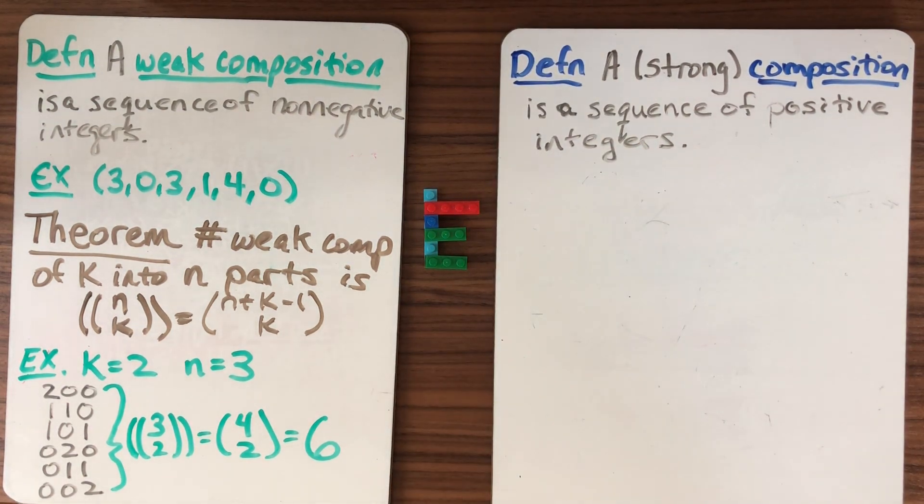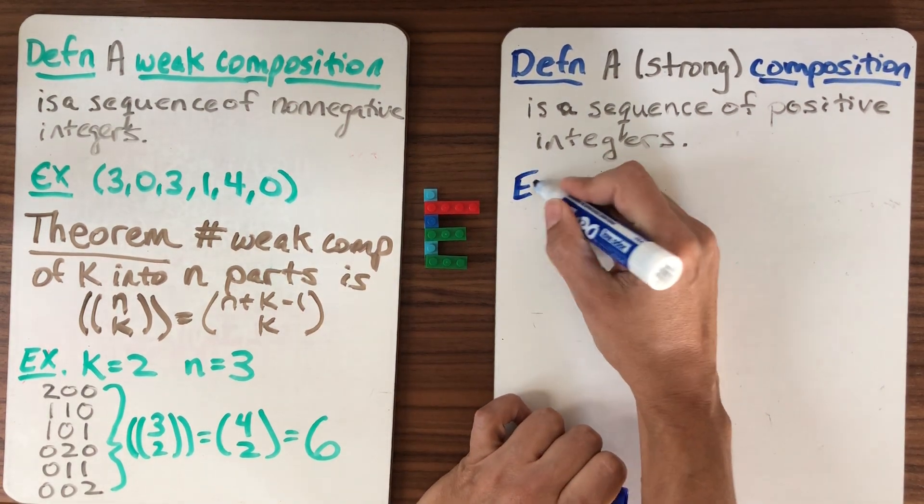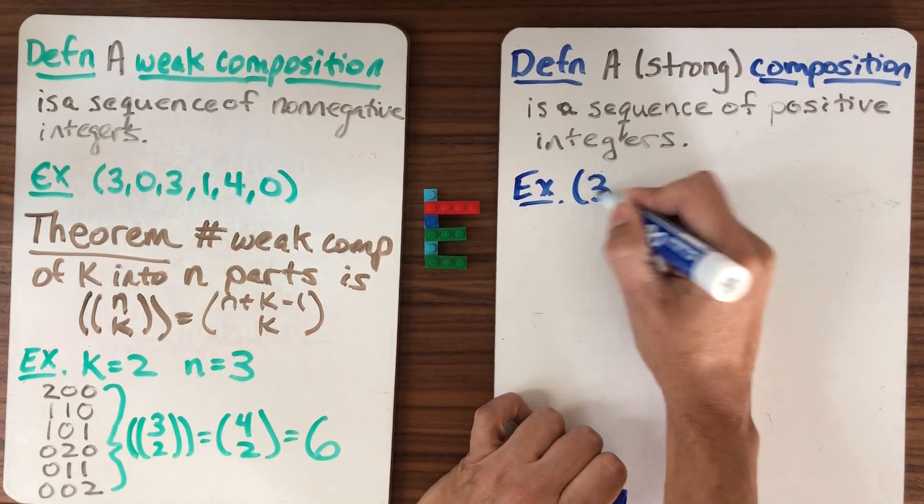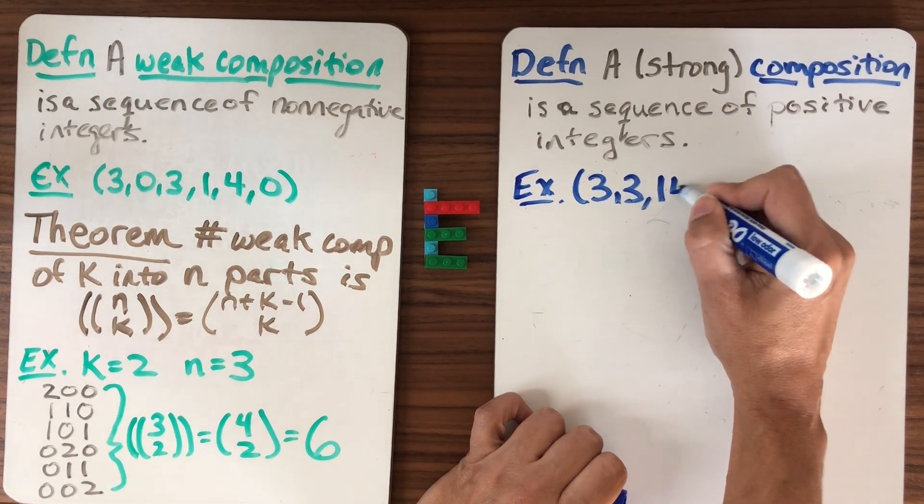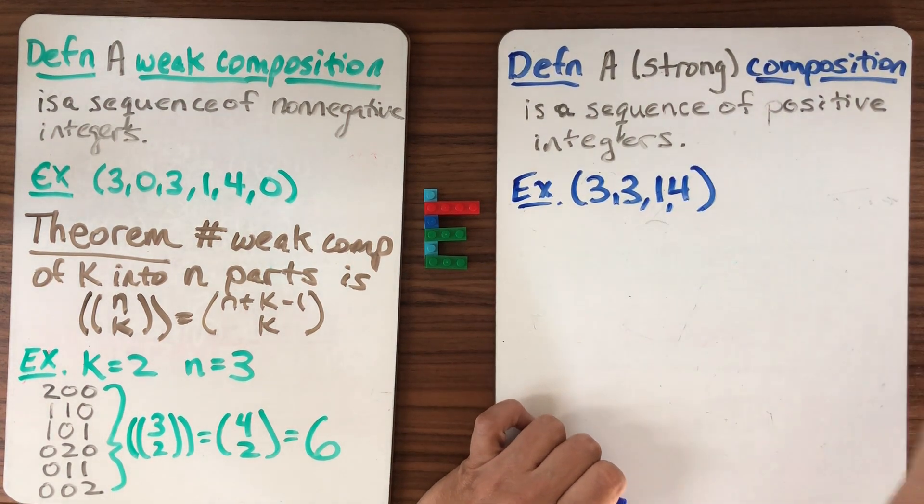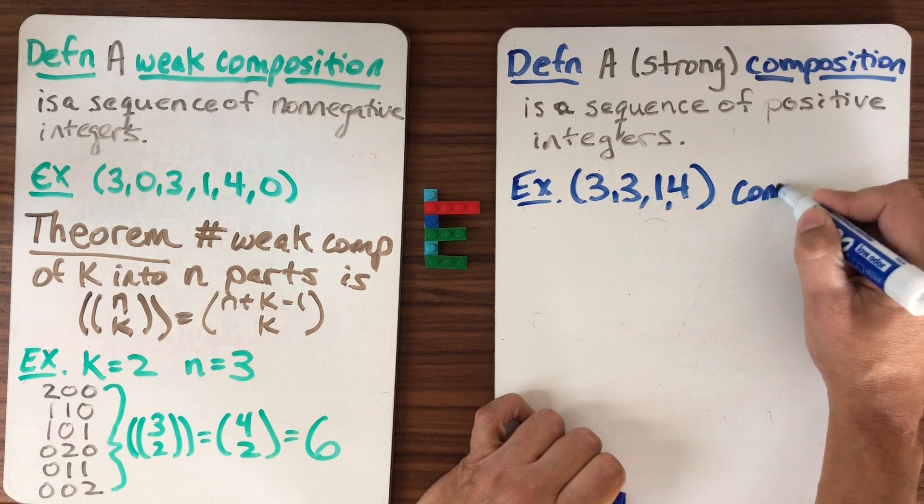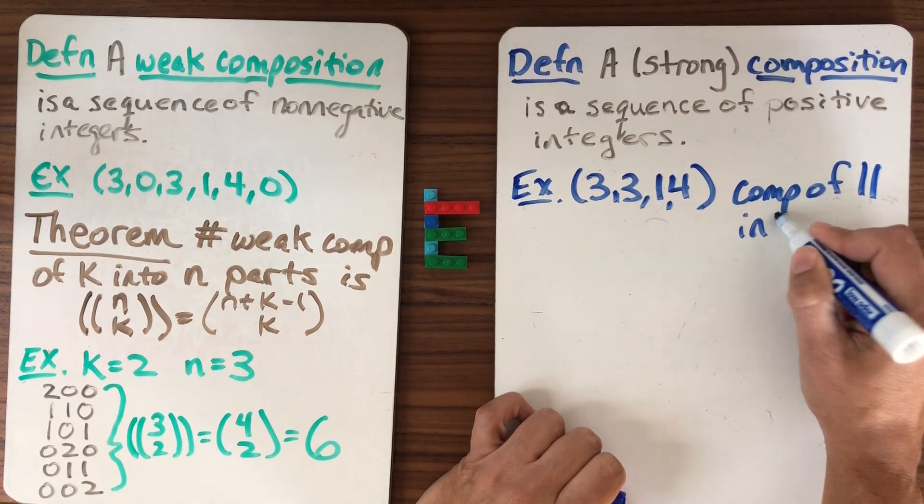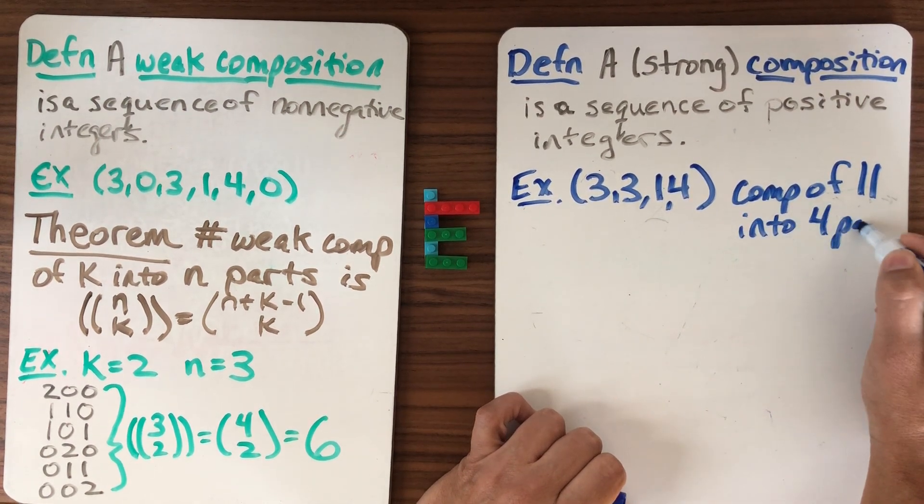But here's an example of a strong composition. Maybe I'll use blue for the strongs. So for example, we could take 3, 3, 1, 4. This is a perfectly good composition of 11 into four parts.